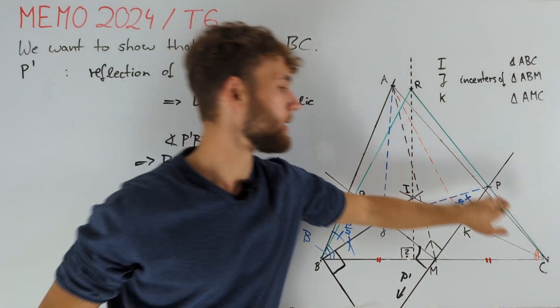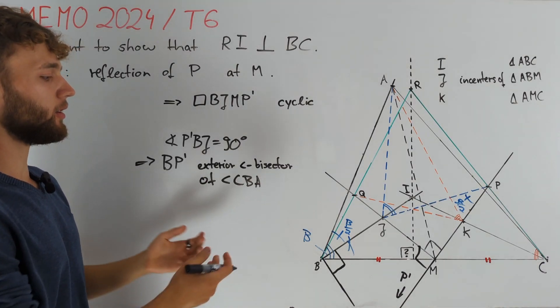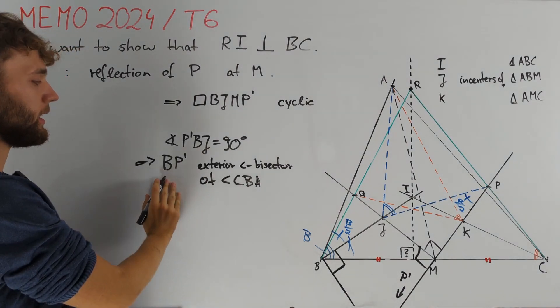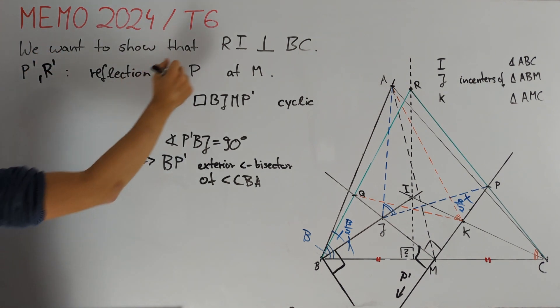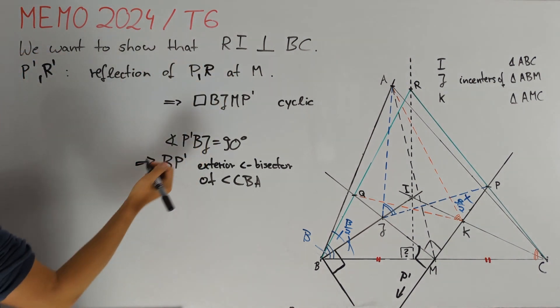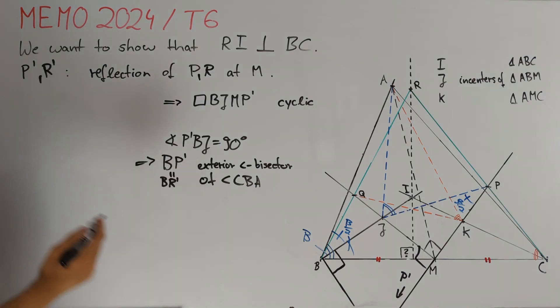Since R lies on line CP, this tells us that the reflection of R also lies on line BP'. In other words, if we let R' be the reflection of R at M, then BP' is nothing but line BR'.